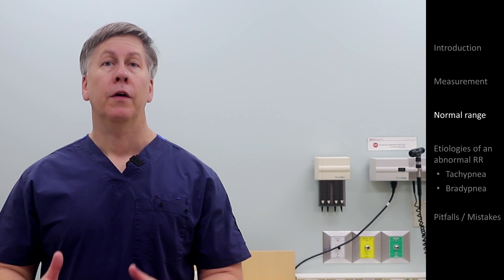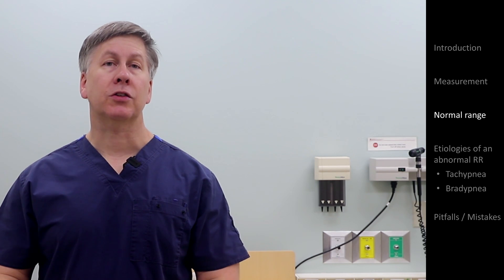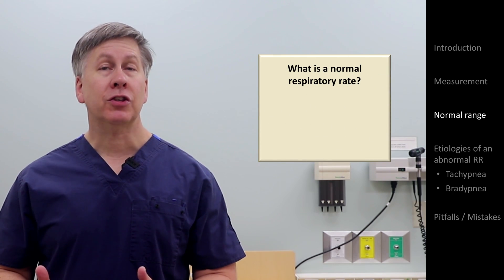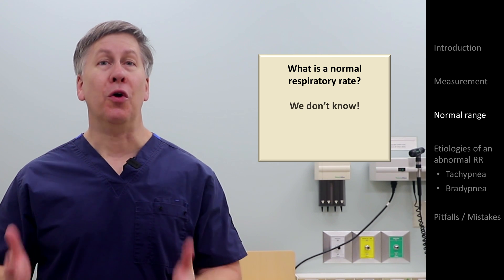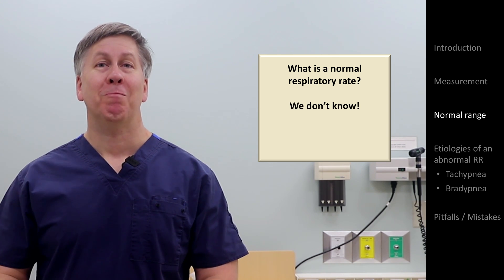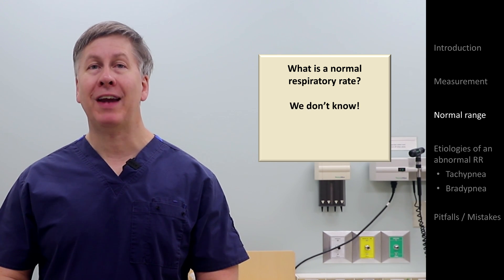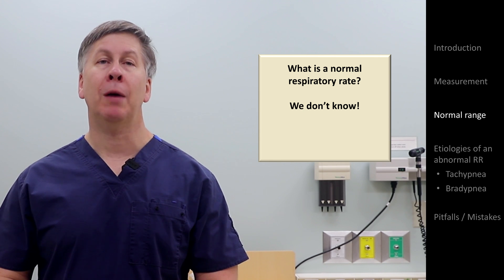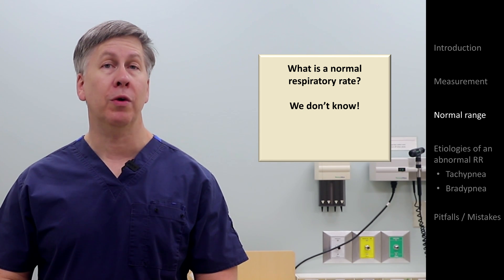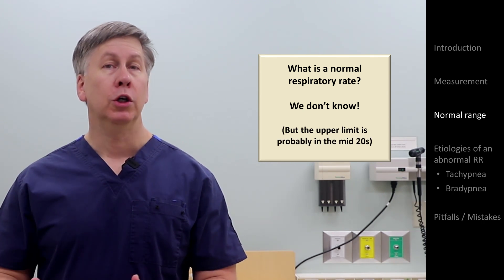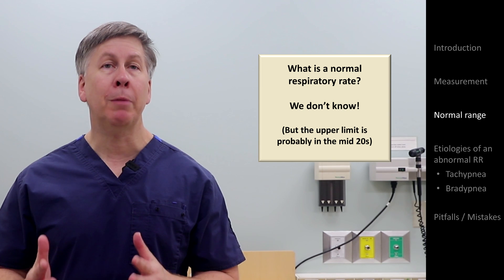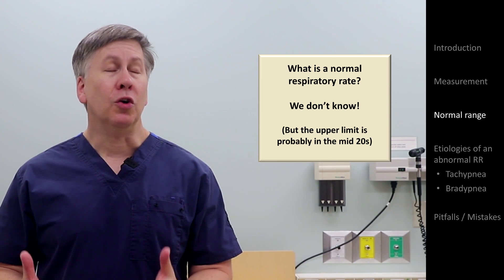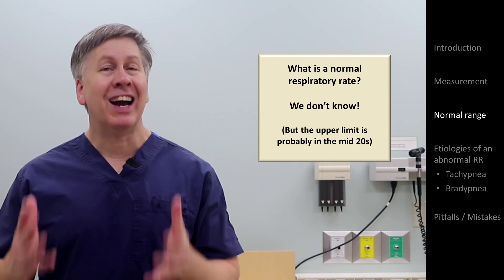So in short, when someone asks what's the normal respiratory rate in adults, the correct answer is: we don't know. Having said that, the very limited data that we do have suggests that all the commonly cited ranges are too low, and that an upper limit of normal should probably be in the mid-20s or even higher — but that we don't actually know is kind of absurd.